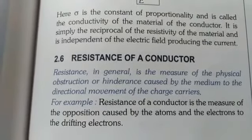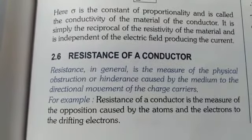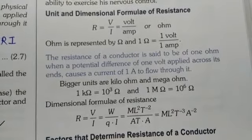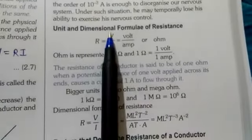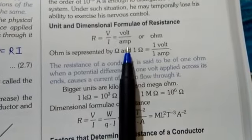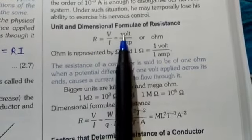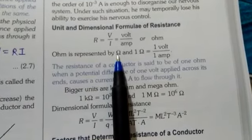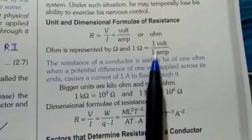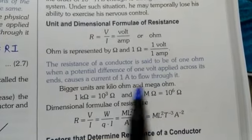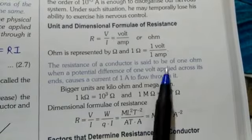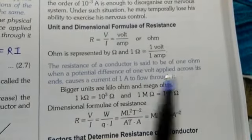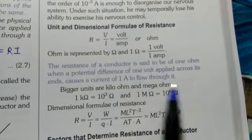Now let's discuss some factors on which resistance of a conductor depends. But before that, let me tell you the unit and dimensional formula for resistance. R equals V upon I, that is volt upon ampere. So the unit of R is volt per ampere, which is also called Ohm, denoted by the symbol Ω. We can say 1 ohm equals 1 volt upon 1 ampere. The resistance of a conductor is said to be 1 ohm when a potential difference of 1 volt applied across its ends causes a current of 1 ampere to flow through it.